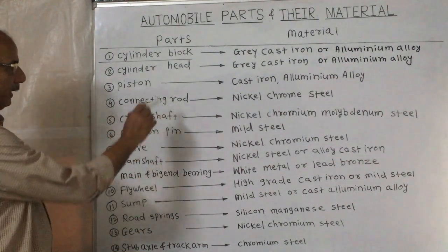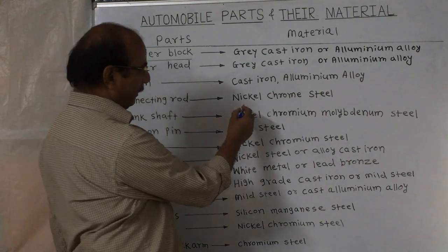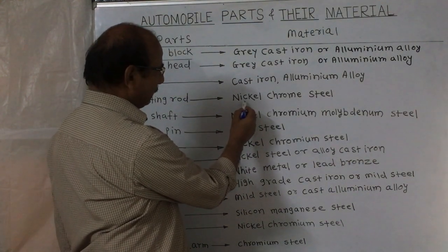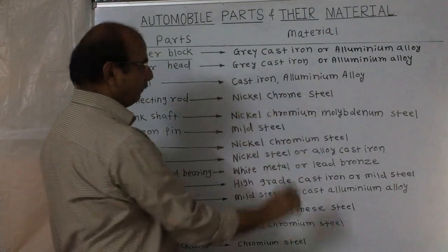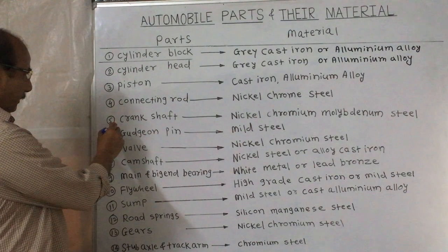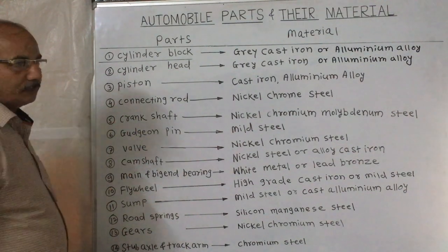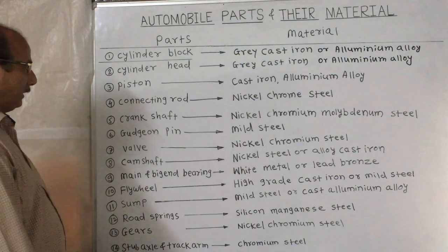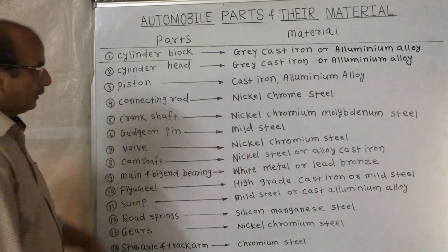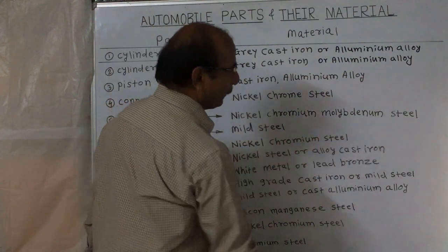Next, the fourth one is the connecting rod. The connecting rod is made from nickel-chrome steel. Then the fifth one is the crankshaft. The material of the crankshaft is nickel-chromium-molybdenum steel.